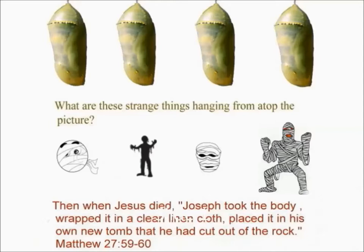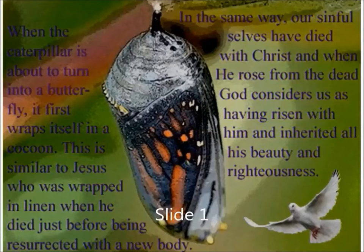What are these strange green things hanging from atop these pictures? Here's a clue: "When Jesus died, Joseph took the body, wrapped it in clean linen cloth, and placed it in his own new tomb that he had cut out of the rock." — Matthew 27:59-60. When the caterpillar is about to turn into a butterfly, it first wraps itself in a cocoon. This is similar to Jesus, who was wrapped in linen when he died just before being resurrected with a new body. In the same way, our sinful selves have died with Christ, and when he rose from the dead, God considers us as having risen from the dead with him — and we inherited all his beauty and righteousness.